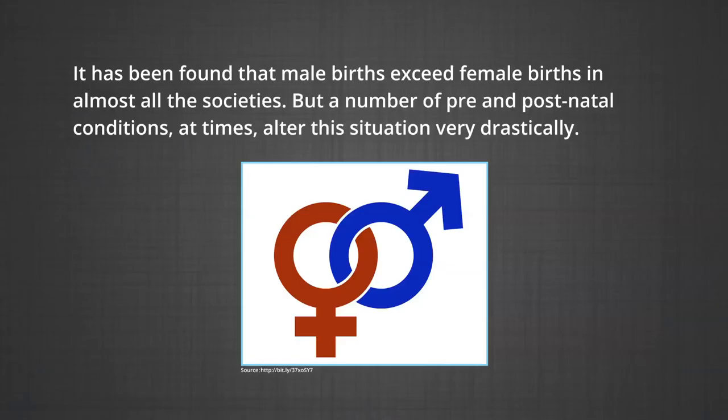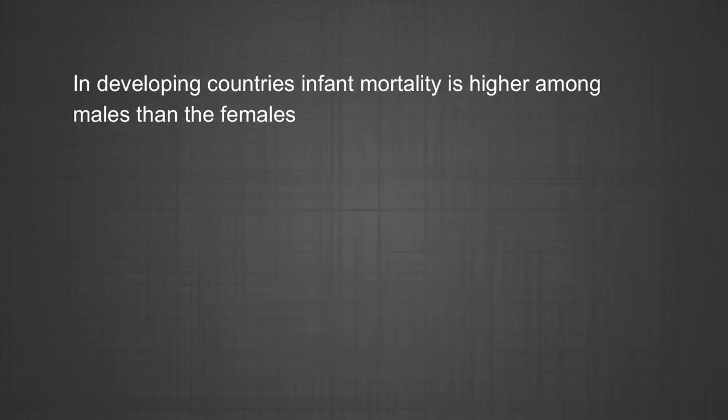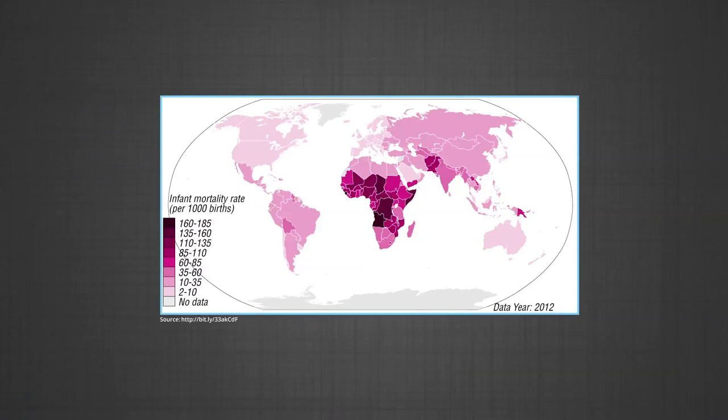It has been found that male births exceed female births in almost all societies. But a number of pre and post natal conditions at times alter this situation very drastically. In developing countries, infant mortality rates are much higher among males than females, so even though more male children are born, they get eliminated within one year. Even in developed countries, male mortality is higher than female mortality at all stages of life. As such, excess of males at birth is progressively eliminated until about age 30, after which there is an increasing dominance of females.